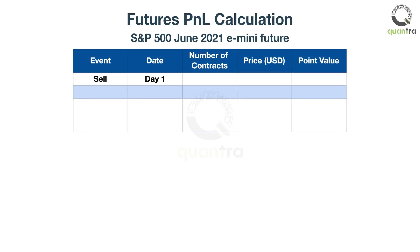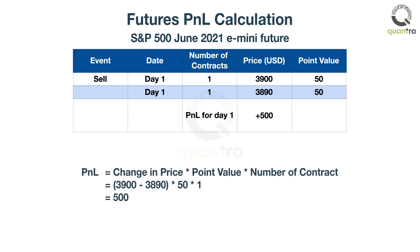Consider a trader who takes a short position in the S&P 500 June 2021 e-mini future, selling to open one contract at $3,900. The point value of this contract is 50, and that means that for every dollar the market moves, you gain or lose $50. On the same day that the trader opened this position, the end-of-day closing price was $3,890. That means that the price of this futures contract changed by $10. The point value is 50, so the change in value was $500. The price went down and the trader was short, so he now has an unrealized gain of $500.